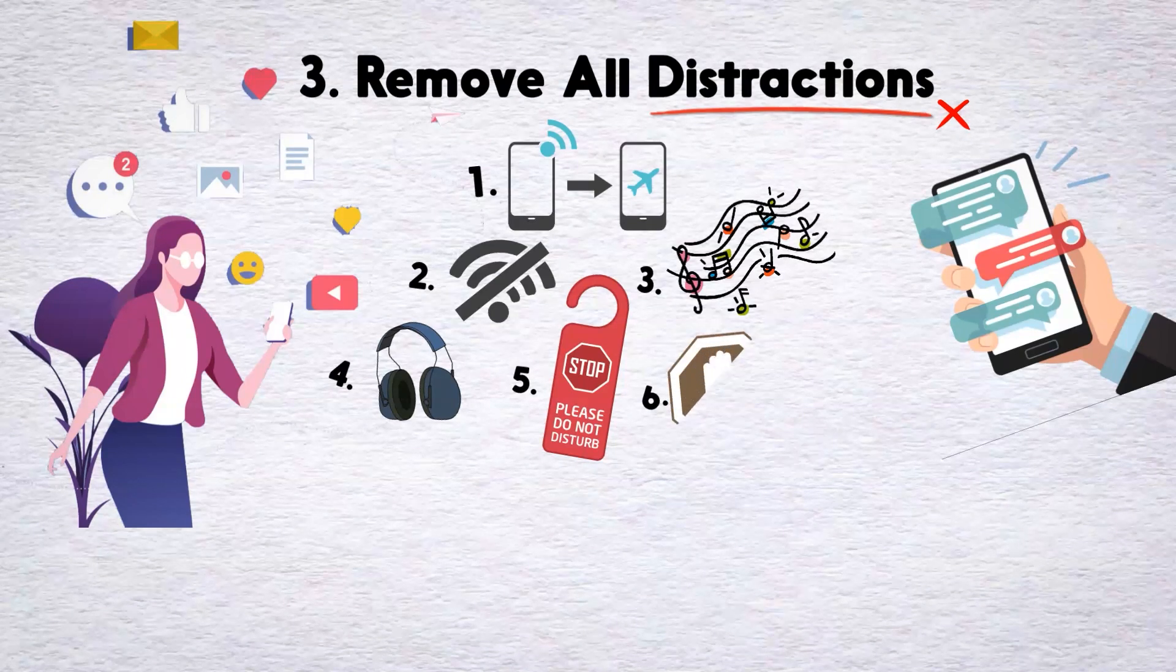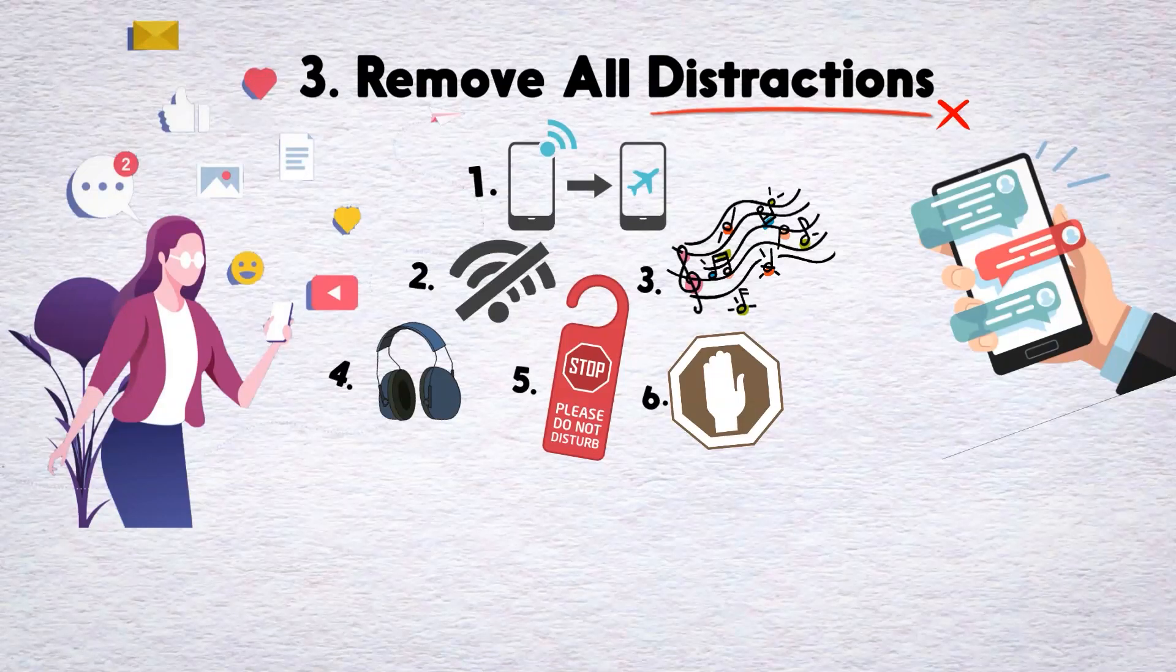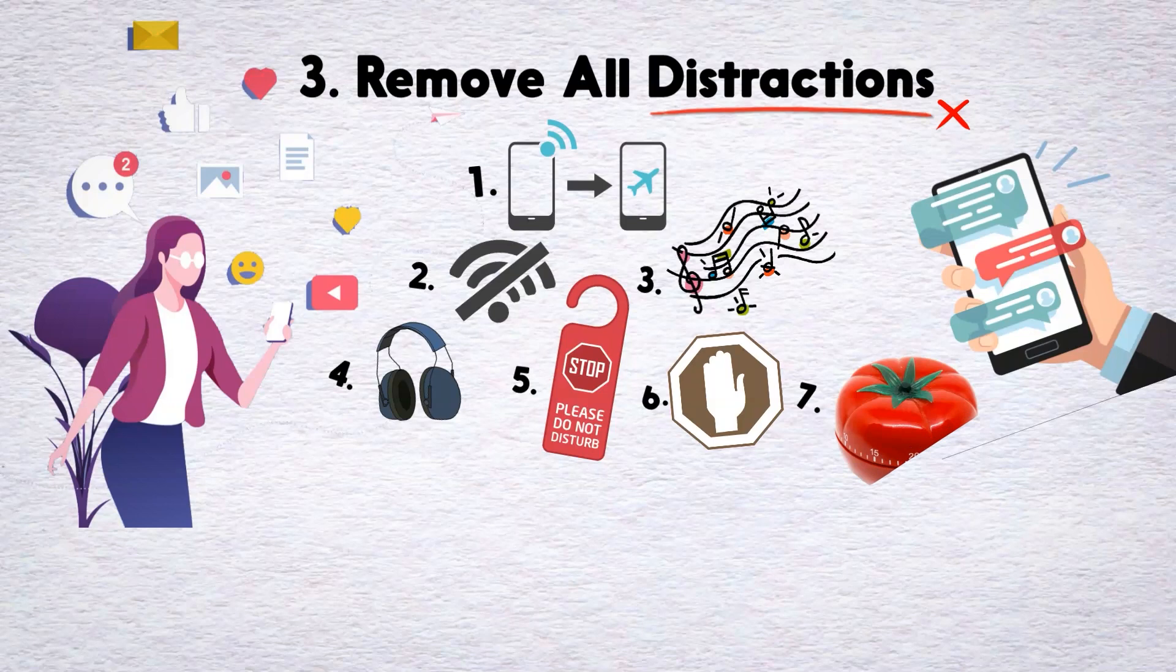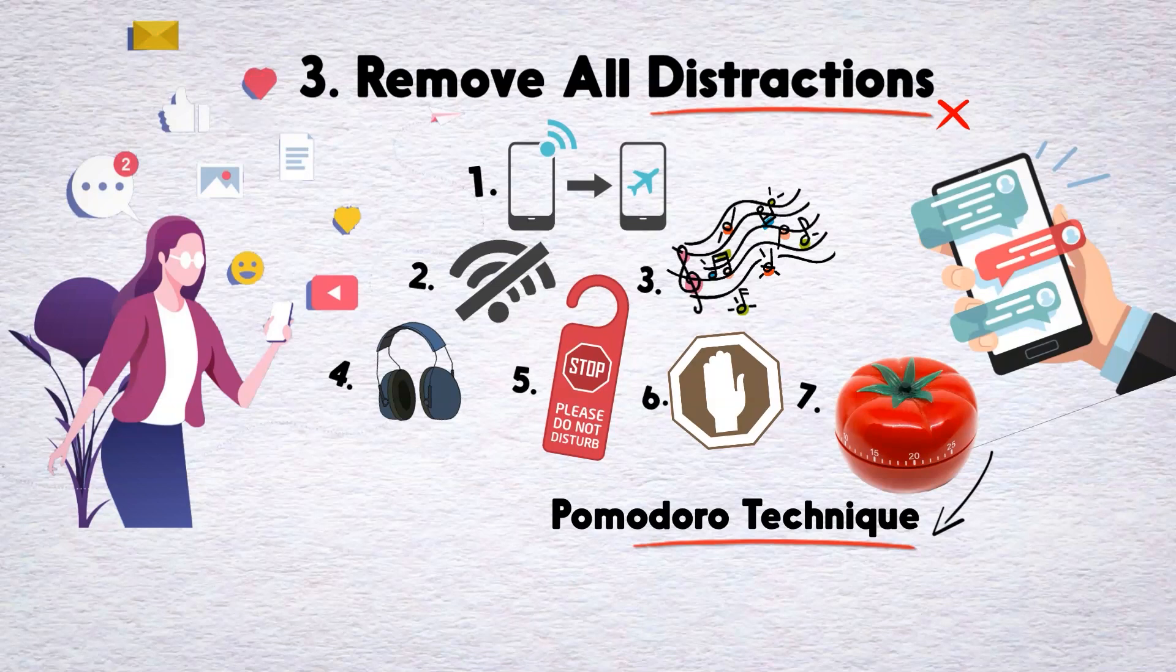Tell co-workers and family members that you shouldn't be disturbed during this time unless it's an emergency. Use a website blocking app to prevent you from browsing specific sites that are your weakness. And set a timer to work on your one thing without taking a break. You can use the Pomodoro Technique, which is a strategy that we covered in a recent video.